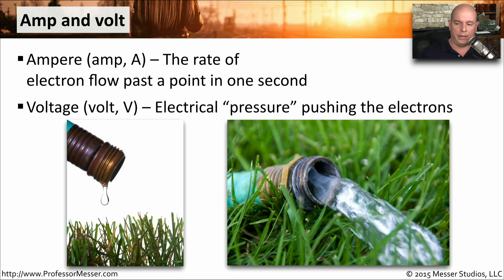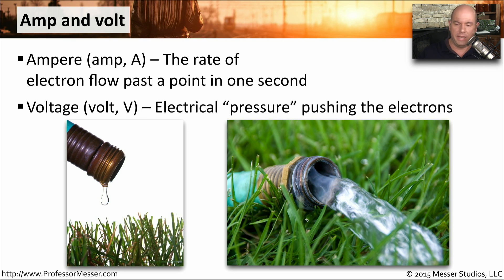You can think of this in relation to a garden hose. You have water flowing through the hose. If you have a larger hose, you can push more amps — or more water — through that hose. If you were to turn the faucet on a little bit more, you would be creating more pressure in that hose, which is similar to creating more voltage.